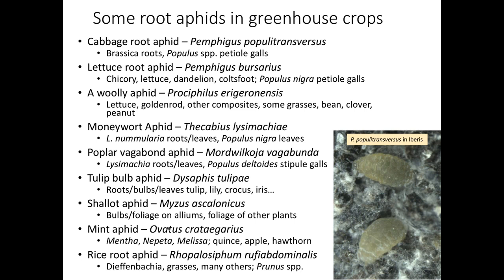Tulip bulb aphid we've seen on iris, tulips, crocus, and some other crops. Shallot aphid came up fairly recently in greenhouse chives with problems on foliage as well as in the root zone. Mint aphid was seen in greenhouse production of mint plants and goes after other things in the mint family. Rice root aphid has been seen in foliage plants and some edible crops — it has a very wide host range that can include grasses and other species too.